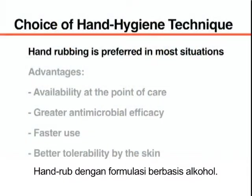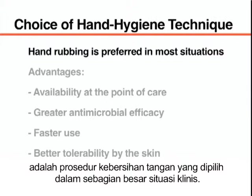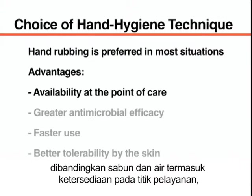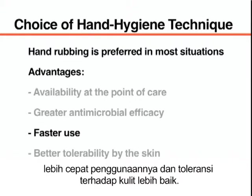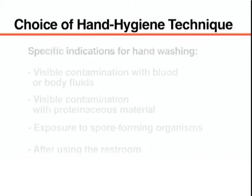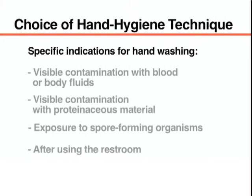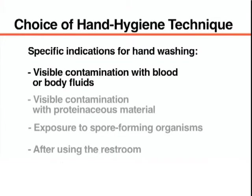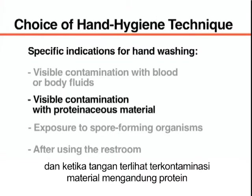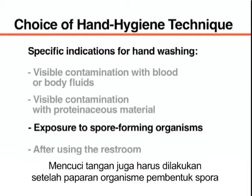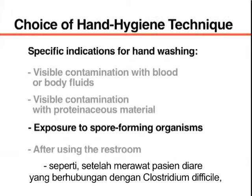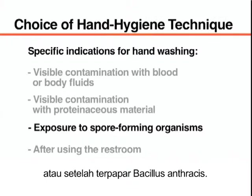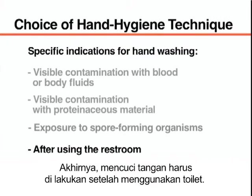Hand rubbing with an alcohol-based formulation is the preferred hand cleansing procedure in most clinical situations. The main advantages over soap and water include availability at the point of care, greater antimicrobial efficacy, faster use, and better skin tolerability. However, hand washing must be conducted when hands are visibly contaminated with blood, body fluids, or proteinaceous material, and after exposure to spore-forming organisms — for example, after caring for patients with diarrhea associated with Clostridium difficile or after exposure to Bacillus anthracis. Finally, hand washing should be performed after using the restroom.